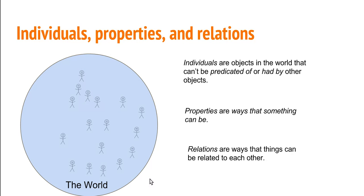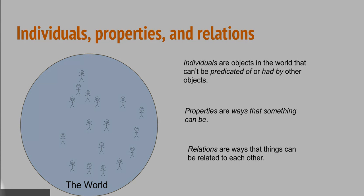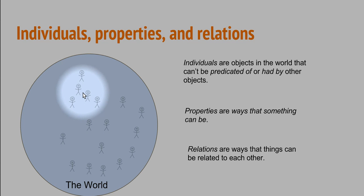We need to distinguish properties from the individual things that have them. A property is just a way that something can be. So for example, suppose these individuals are all bald — baldness is a way that something can be, so it's a property that they all have. Individuals are objects that have properties but aren't themselves properties; they're not had by other things.